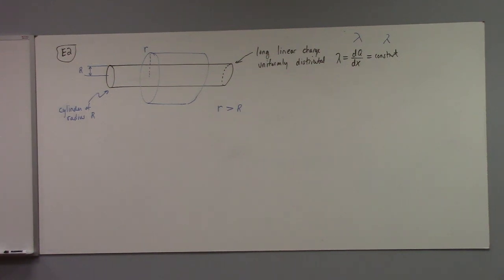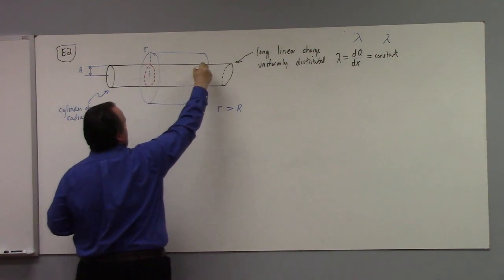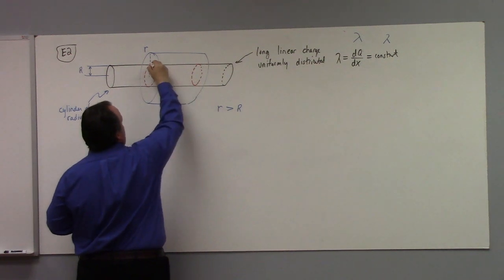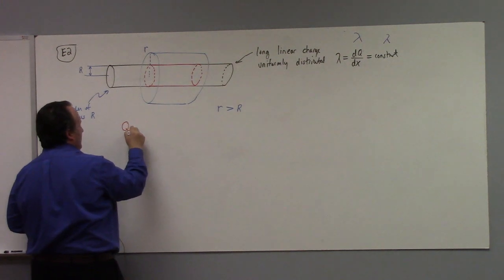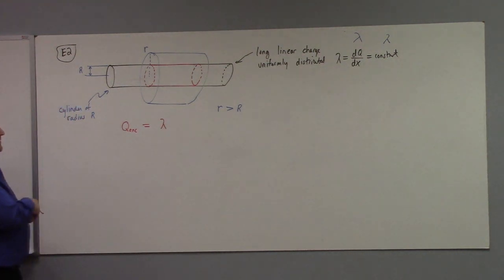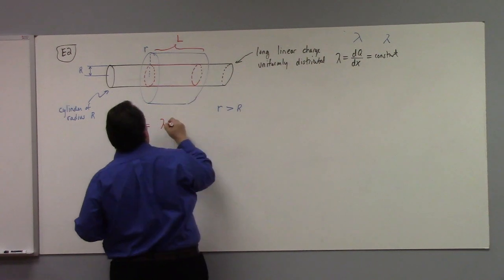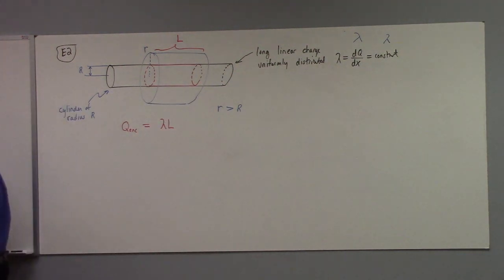How much charge is enclosed in that Gaussian cylinder? It's exactly the whole amount of charge from one end to the other. Q enclosed in this situation should be lambda times the length of this cylinder — we'll call the length big L. So lambda L should be the charge enclosed here, because we enclose the totality of the charge along that length.